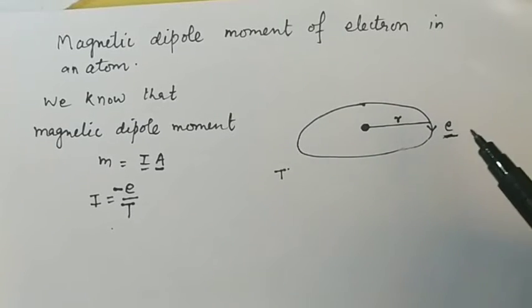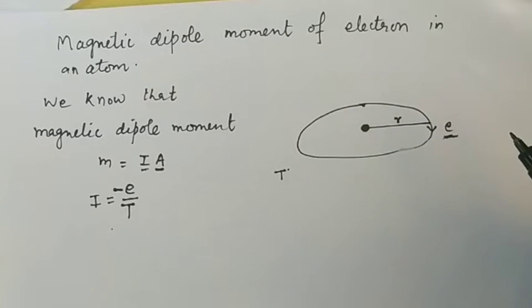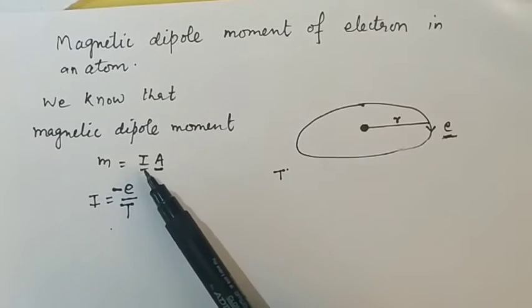If small e is the charge of an electron, then to find out the magnetic dipole moment, first we should know what is magnetic dipole moment for a loop. We know that magnetic dipole moment is the product of current and area of the loop.